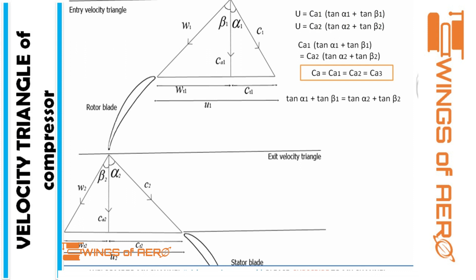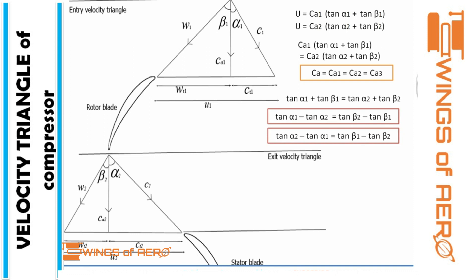From this equation, you can derive two more useful relations: tan(alpha1) − tan(alpha2) = tan(beta2) − tan(beta1), or equivalently tan(alpha2) − tan(alpha1) = tan(beta1) − tan(beta2). Remember: region 1 is the entry velocity triangle of the rotor blade, which has both alpha and beta. So: tan(alpha1) + tan(beta1) = tan(alpha2) + tan(beta2). Knowing this form makes it easy to derive the others. This is an important part.